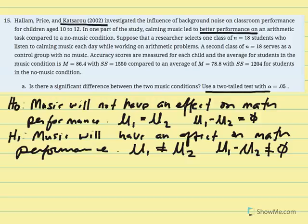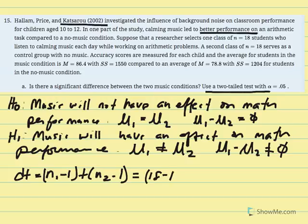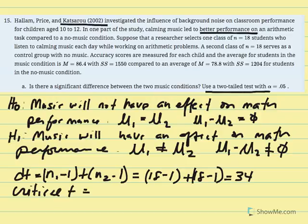To test significance, we need degrees of freedom. Degrees of freedom equals n1 minus 1 plus n2 minus 1. Each sample had 18 individuals, so 18 minus 1 is 17, plus 17 equals 34 degrees of freedom. We'll find our critical t using degrees of freedom of 34, two-tailed test at alpha 0.05 in our t table.